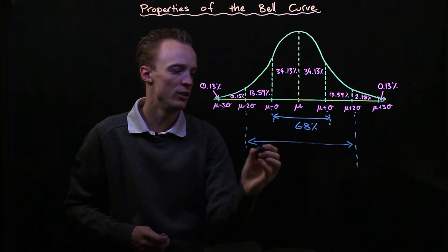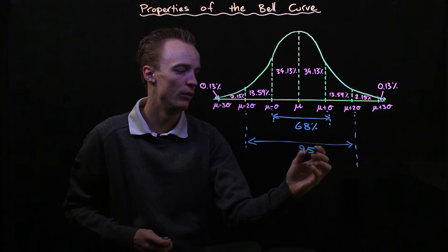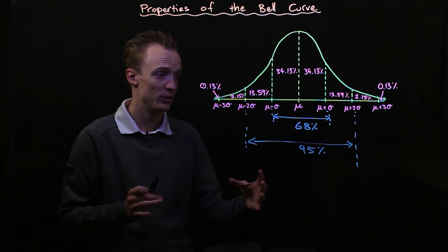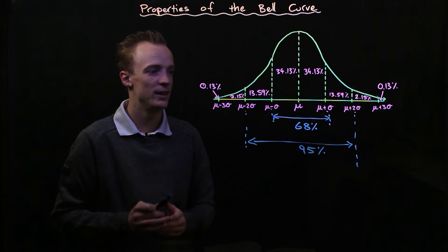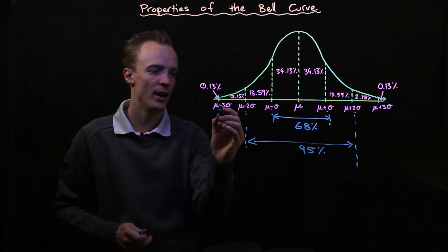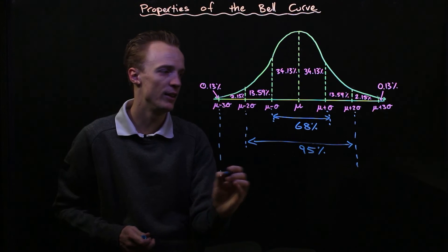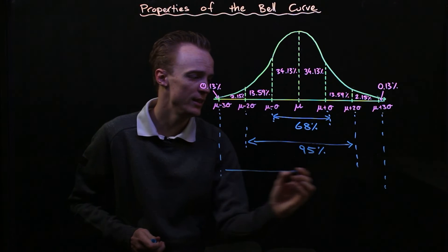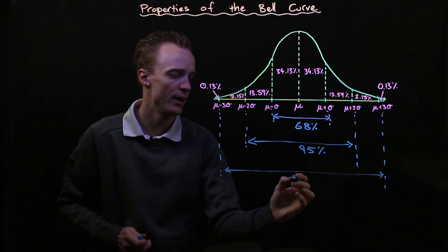We'll capture 95 percent of the data with two standard deviations. So already we've nearly got all the data just going plus or minus two standard deviations away from the mean. And like we talked about at the start, if we move three standard deviations away from the mean we actually capture 99.7 percent of the data.